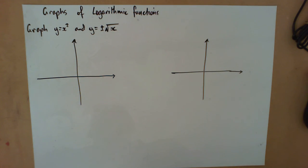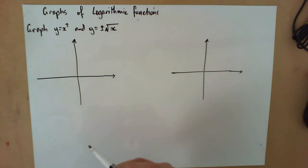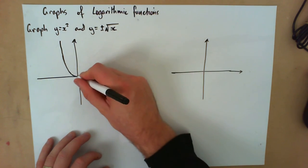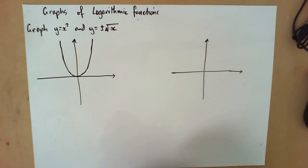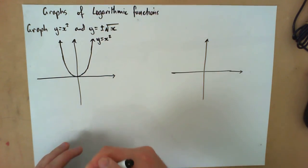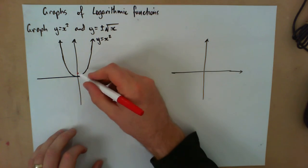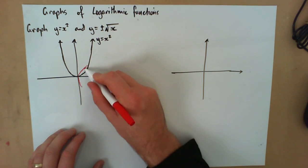In this video we're going to have a look at graphs of logarithmic functions. We're going to go back a step and look at a graph of y equals x squared and y equals plus or minus root x. For y equals x squared we know it's going to look like a nice parabolic shape, and we've seen y equals plus or minus square root x in the past.